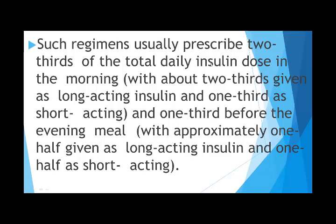To repeat: the calculated starting dose is 36 units total. Two-thirds — 24 units — is given before breakfast in the morning, and one-third — 12 units — before dinner. The morning dose is further divided into two-thirds N and one-third R, giving 16 units NPH and 8 units Regular. The pre-dinner dose is split 50-50: 6 units R and 6 units N.